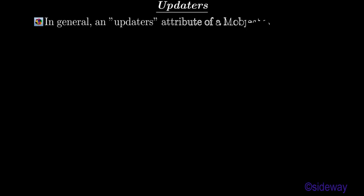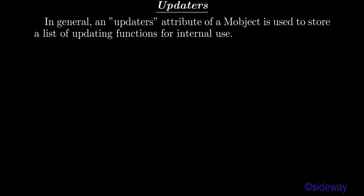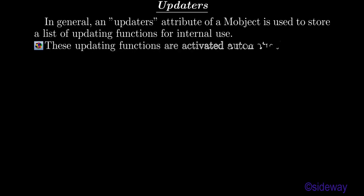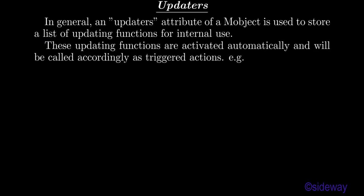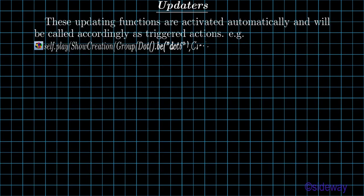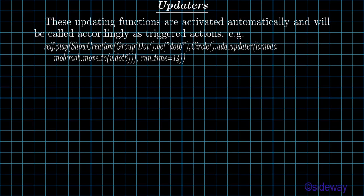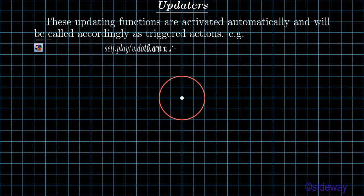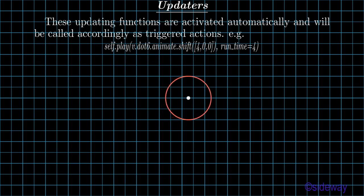Updaters. In general, an updaters attribute of a mobject is used to store a list of updating functions for internal use. These updating functions are activated automatically and will be called accordingly as triggered actions. For example: self.play, show_creation, group, dot, dot b, dot6, circle, dot.add_updater(lambda mob: mob.move_to(b.dot6)), run_time=14. self.play, b.dot6.animate.shift([4, 0, 0]), run_time=4.